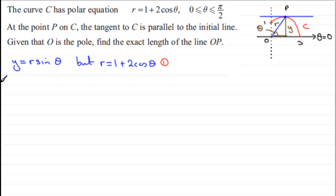So what we get then is that y must be equal to, I'm going to start with sine theta, but sine theta multiplied by r, r being 1 plus 2 cos theta. So now I've got y expressed in one variable here, theta.